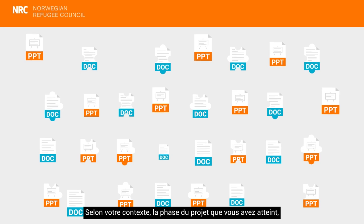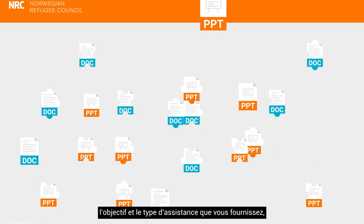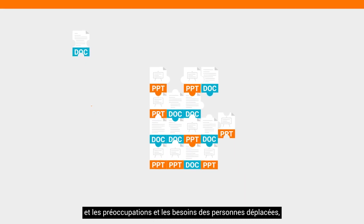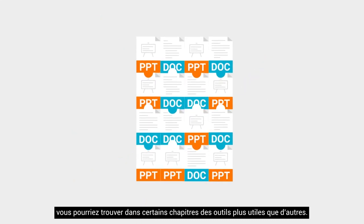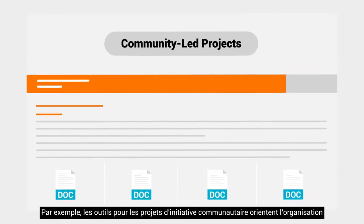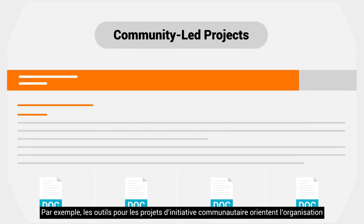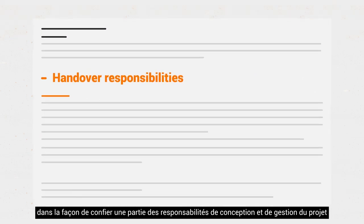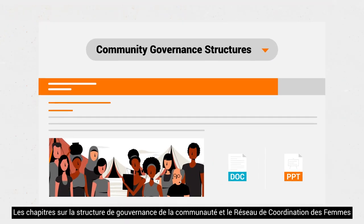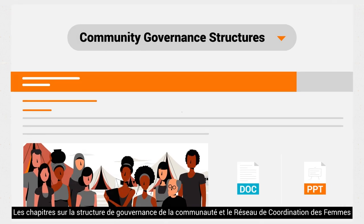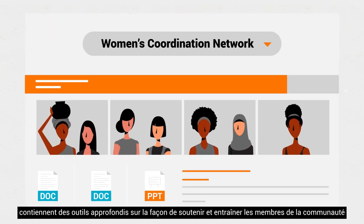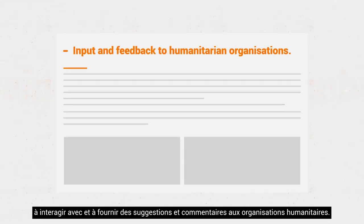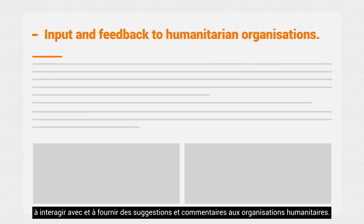Depending on your context, the phase of the project cycle you are in, the objective and the type of assistance you provide, and the concerns and needs of the displaced people, you might find different tools from the different chapters more useful than others. For example, the tools for the community-led projects guide the organisation in how to hand over some of the project design and management responsibilities to the displaced community. The Community Governance Structures and Women's Coordination Network chapters have extensive tools for how to support and train community members in interacting with and providing input and feedback to humanitarian organisations.